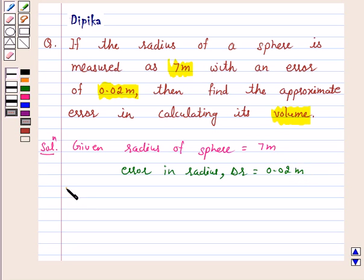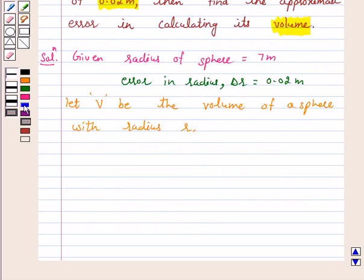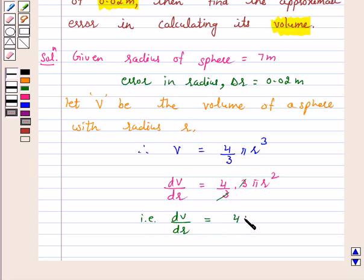Let V be the volume of a sphere with radius r. Therefore, V equals 4 by 3 pi r cube, and dV by dr equals 4 by 3 into 3 pi r square. That is, dV by dr is equal to 4 pi r square.